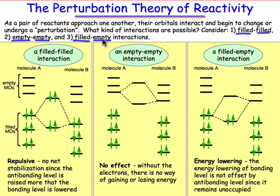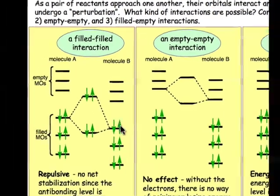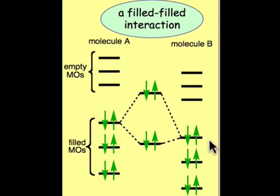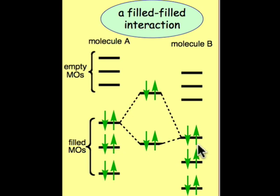Let's take a look at each of these three cases in more detail. What do we mean by orbital interactions? Well, it's just like any other LCAO example, but now it's kind of an LCMO example. We're looking at the very early stages of a reaction where these two molecules and their associated molecular orbitals and molecular orbital energies begin to interact.